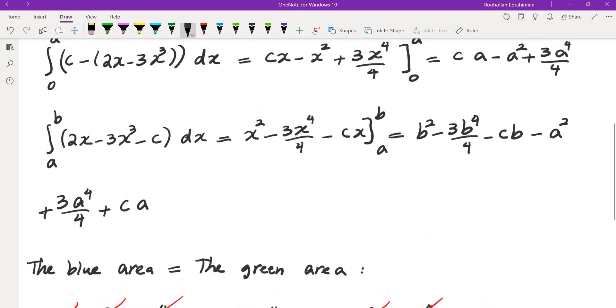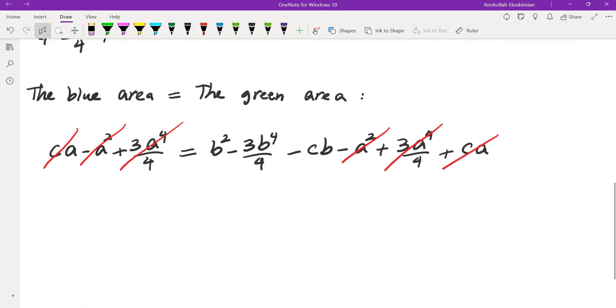If we divide by b, which we know b is positive, b is not 0, so we can divide by b, we get 0 equals b minus 3b to the third over 4 minus c.